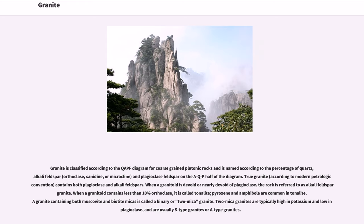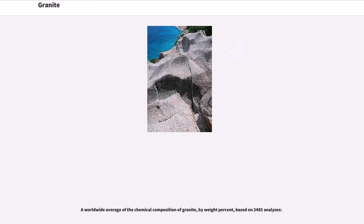When a granitoid is devoid or nearly devoid of plagioclase, the rock is referred to as alkali feldspar granite. When a granitoid contains less than 10% orthoclase, it is called tonalite; pyroxene and amphibole are common in tonalite. A granite containing both muscovite and biotite micas is called a binary or 2-mica granite. 2-mica granites are typically high in potassium and low in plagioclase, and are usually S-type granites or A-type granites. A worldwide average of the chemical composition of granite, by weight percent, is based on 2,485 analyses.